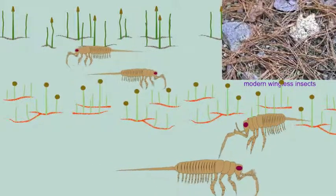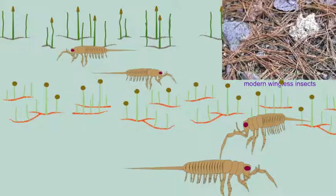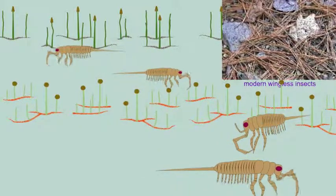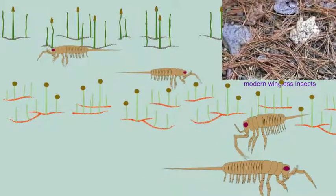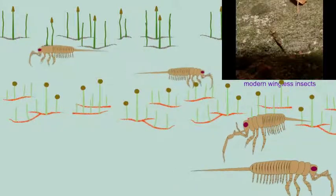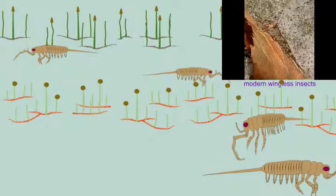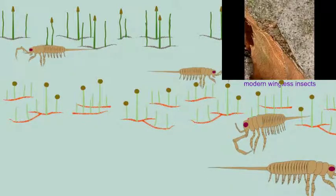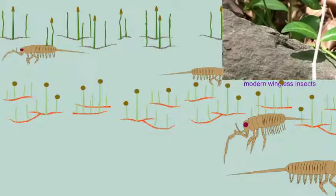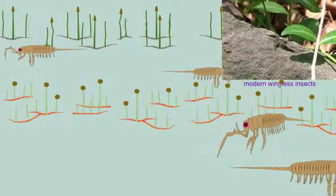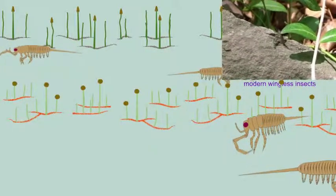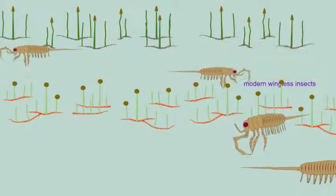It appears the first insects were wingless. Daisy leptis, pictured here, is a member of an extinct order of wingless insects known from the Carboniferous through the Triassic period. Daisy leptis is significant in a couple of features, such as the retention of abdominal legs and the enlarged maxillary palps for feeding.